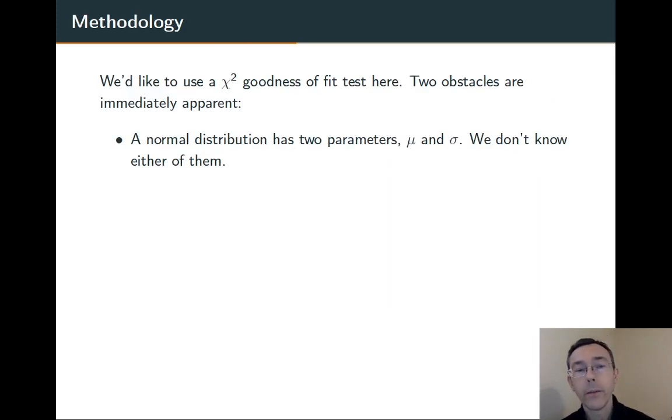So, we'd like to get more quantitative. We'd like to use a goodness-of-fit test. But there's two problems that we have to have specific answers for. Neither one of them is a big deal. First of all, there's some unknown parameters in this distribution, μ and σ. Second of all, the data isn't categorical.